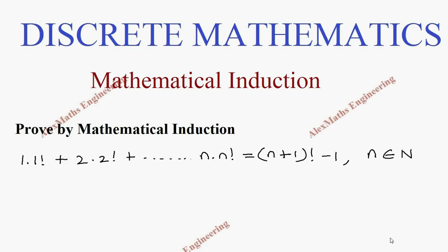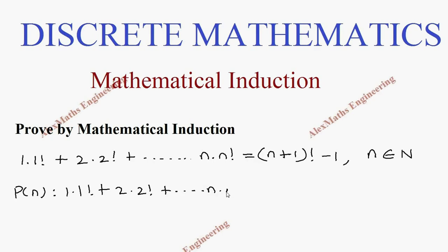Hi students, this is Alex. In this video we are going to prove by mathematical induction: 1 into 1 factorial plus 2 into 2 factorial plus dot dot dot n into n factorial equals n plus 1 factorial minus 1. Let's take this entire term as P of n. P of n has two parts: the left hand side, and the right hand side which is n plus 1 factorial minus 1.